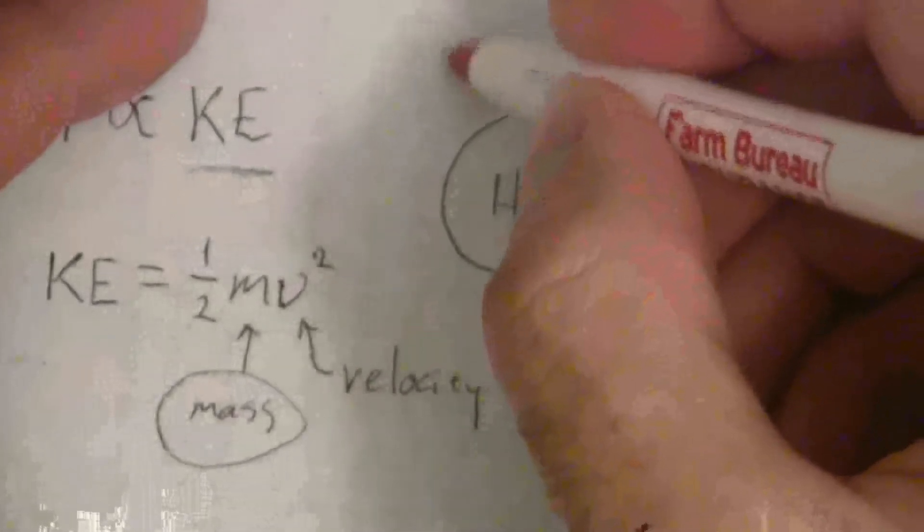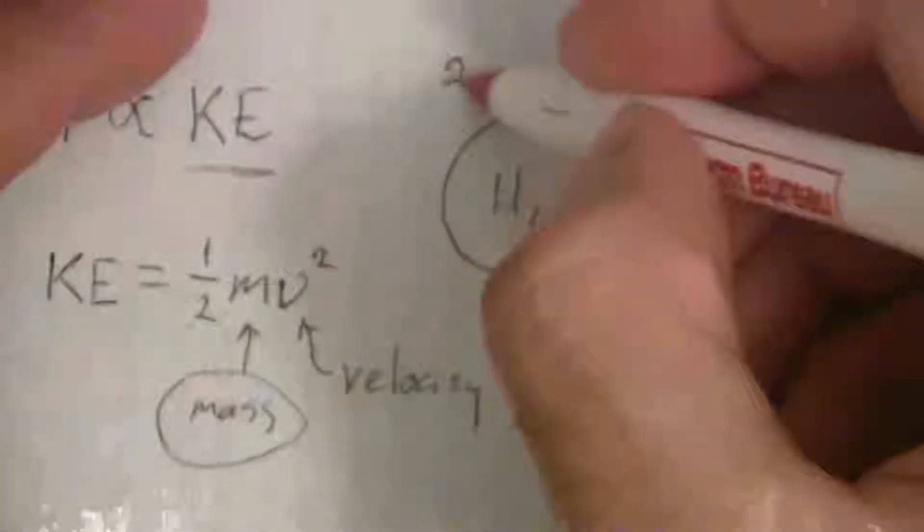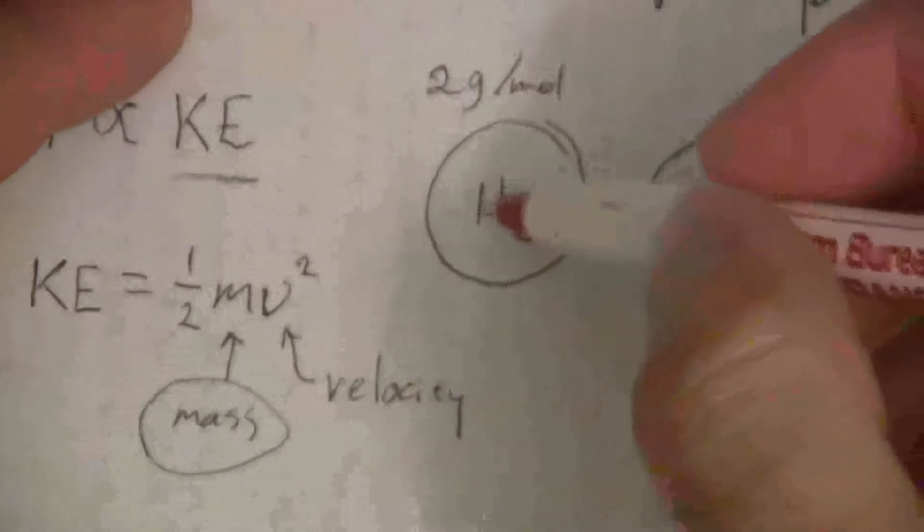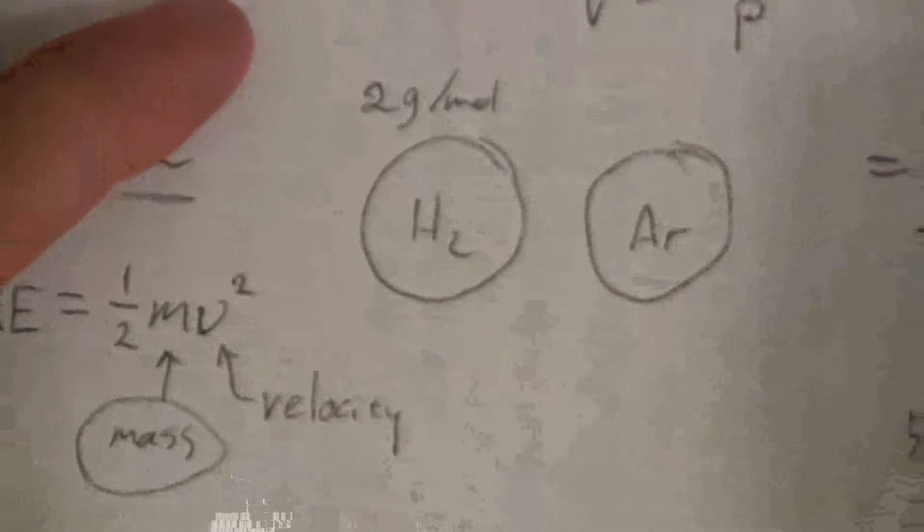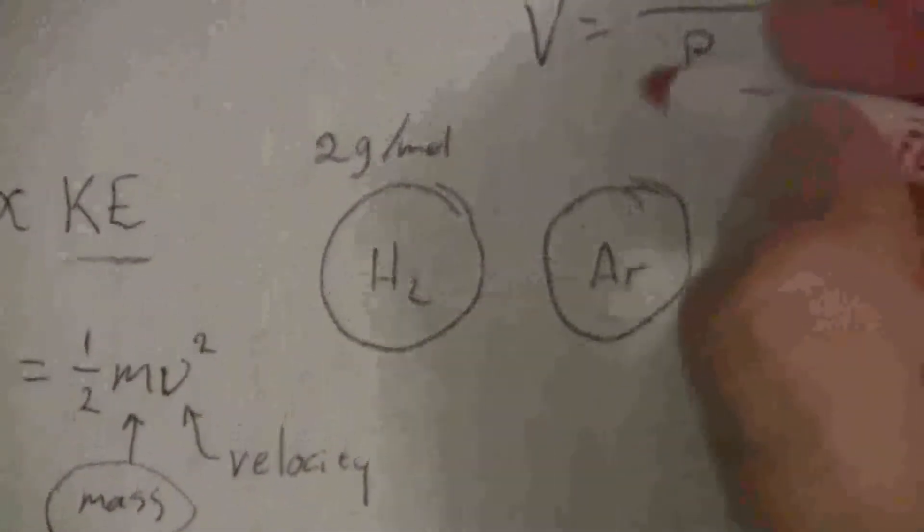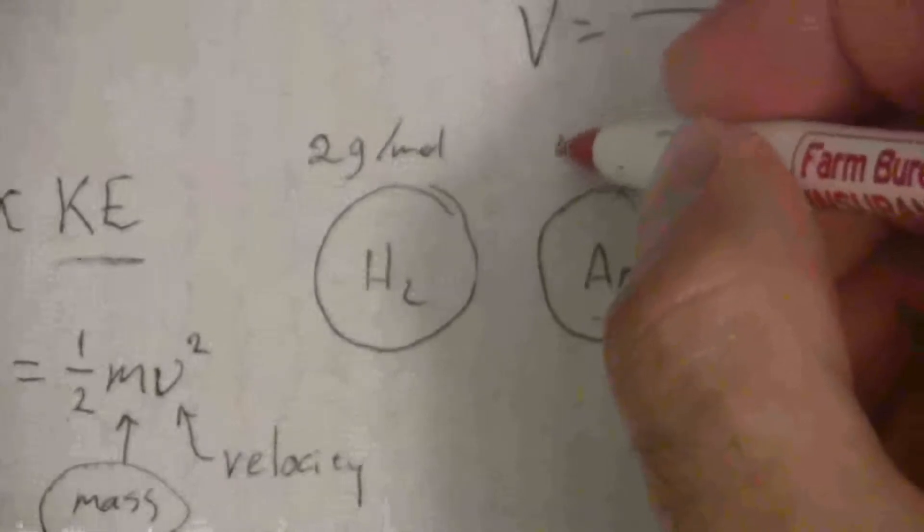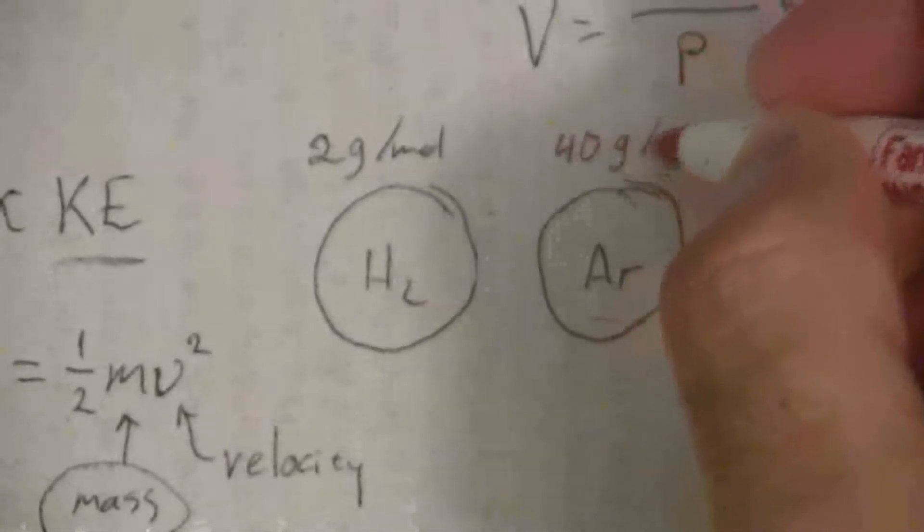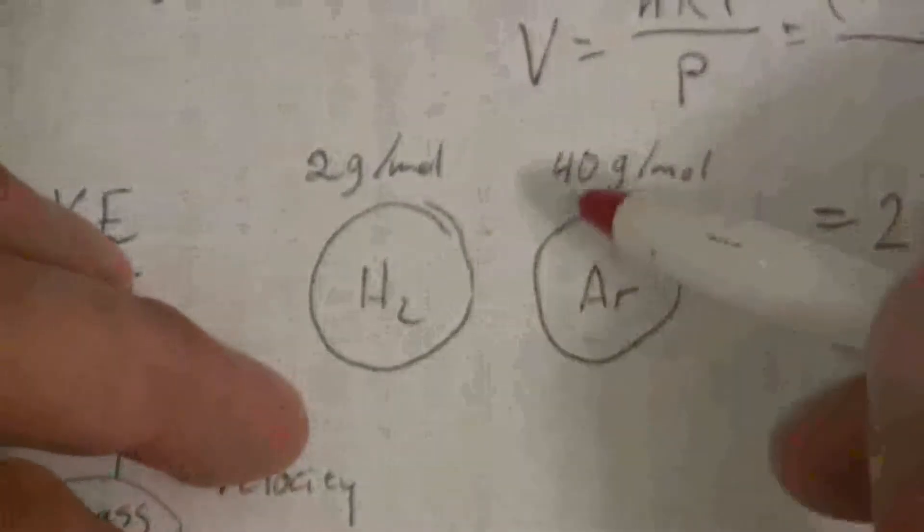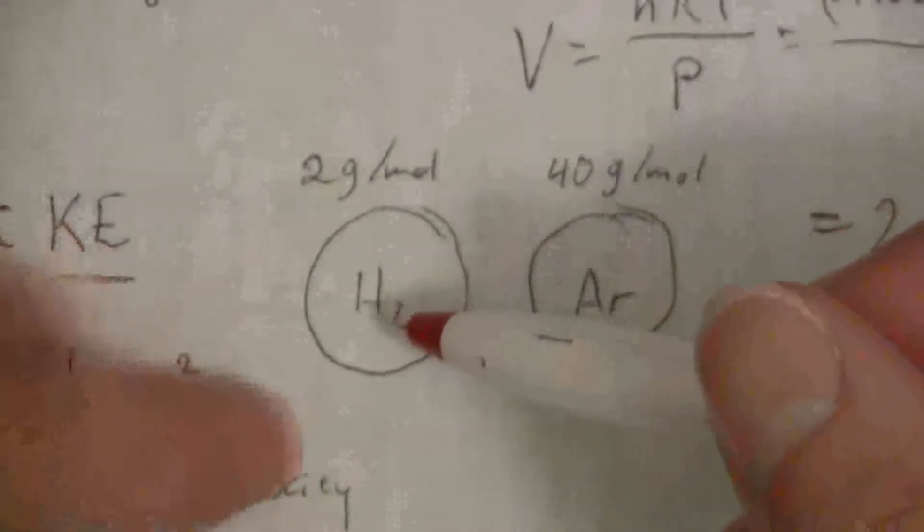Hydrogen has a molar mass of 2 grams per mole, because there's two hydrogen atoms there, roughly 2 grams per mole, whereas argon has a molar mass of about 40 grams per mole. If you look that up on the periodic table, you will find that information. So it's about 20 times heavier than the hydrogen.